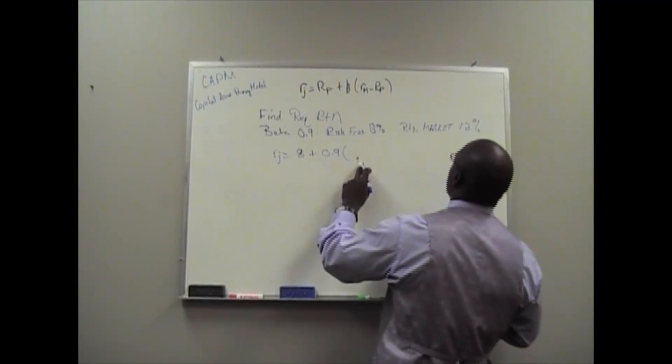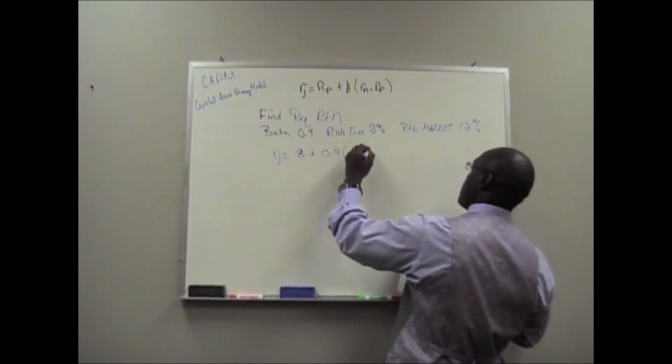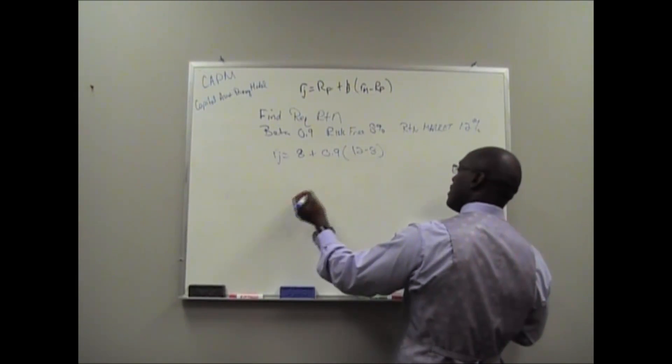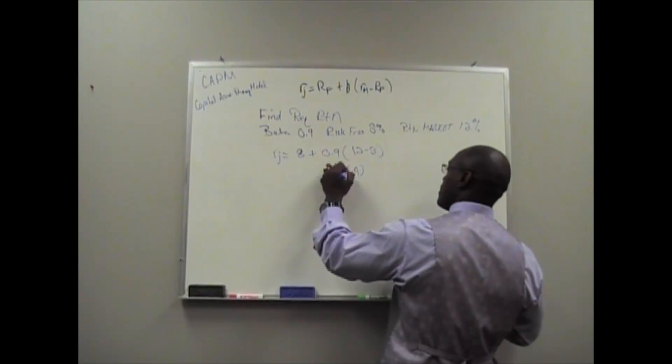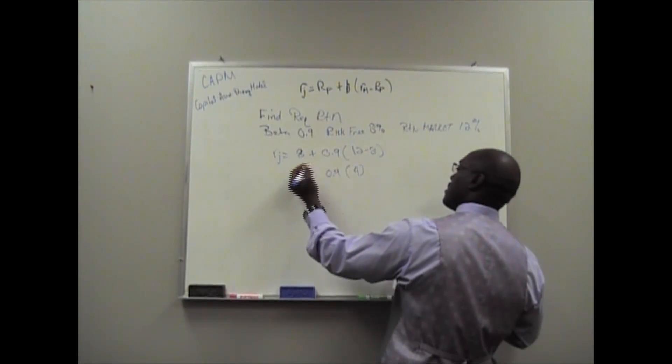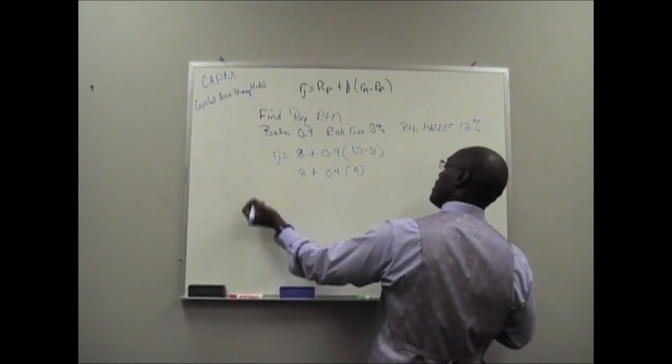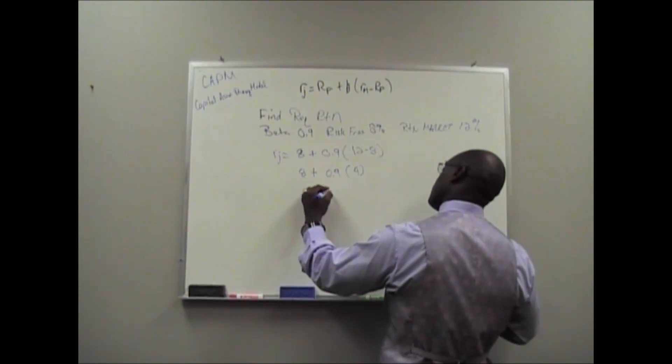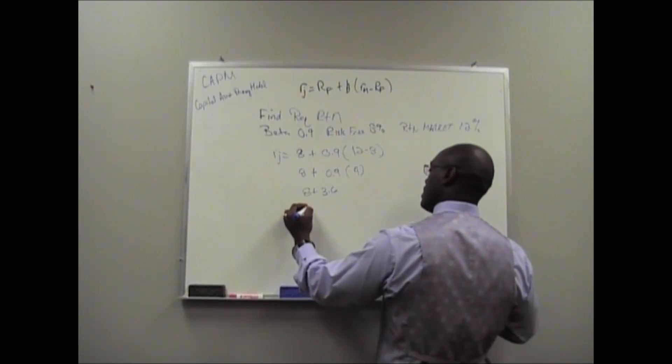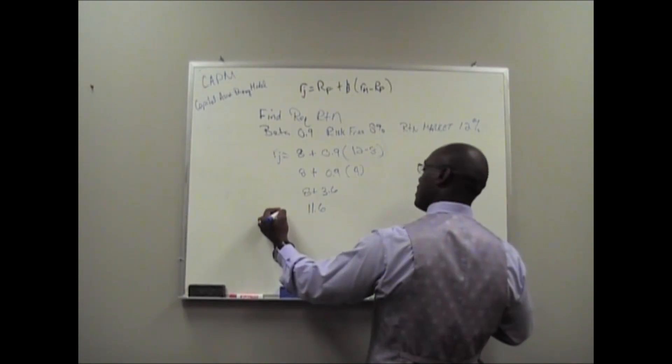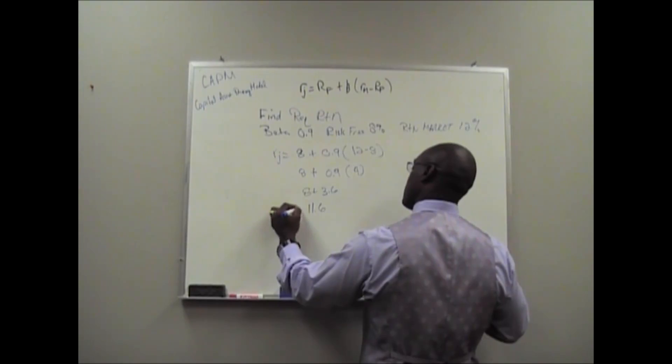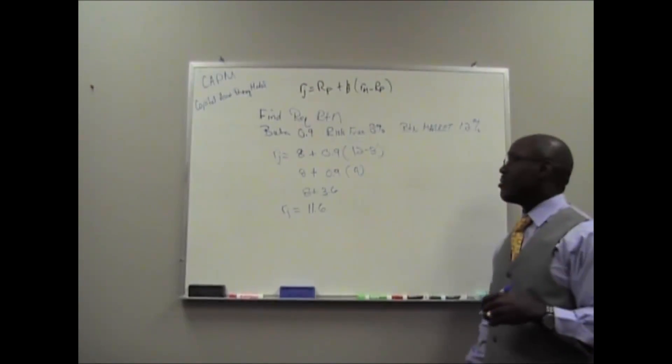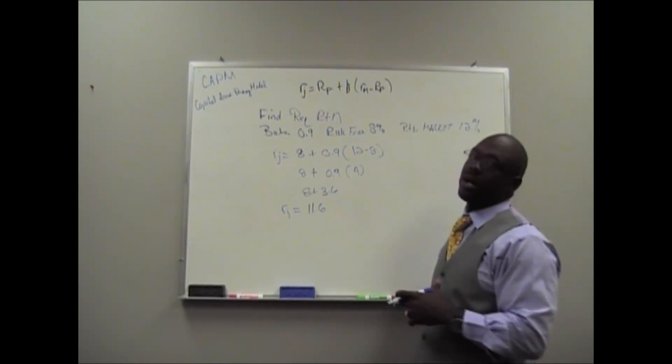And in parentheses we have 12 minus 8. Parentheses first, so that gives us 0.9 times 4 plus 8. 8 plus 3.6 will give us 11.6, the required return. Pretty straightforward, pretty cut and dry.